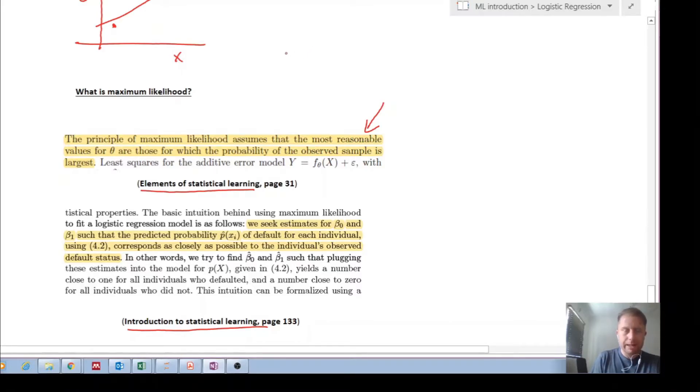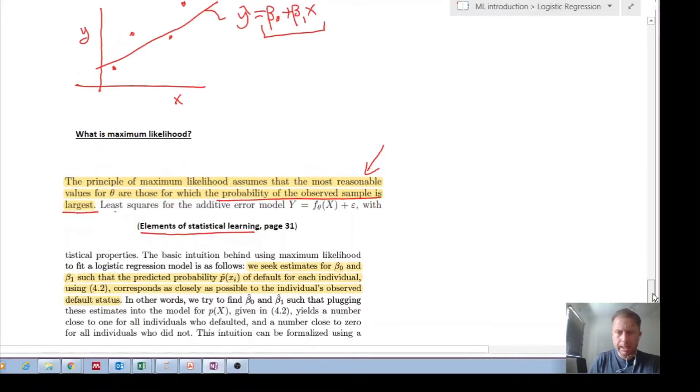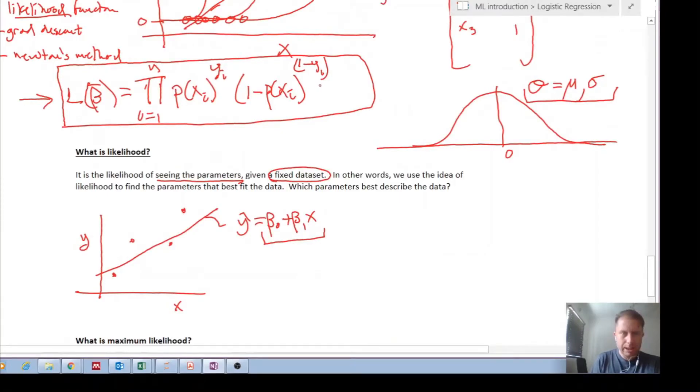So the principle of maximum likelihood assumes that the most reasonable values for theta are those for which the probability of the observed sample is the largest. I'll get into this again in a minute, but this equation here, this function,